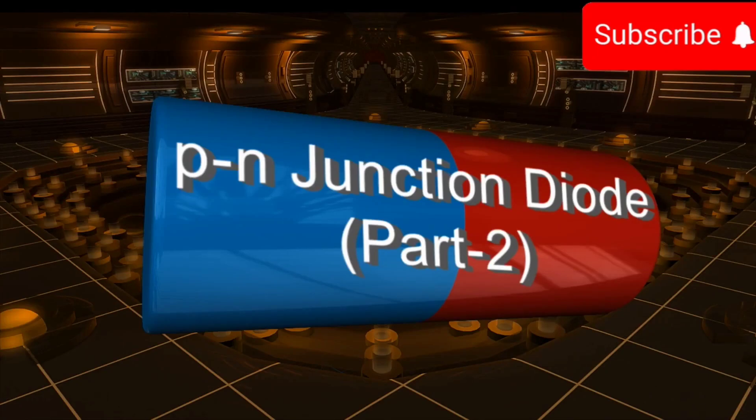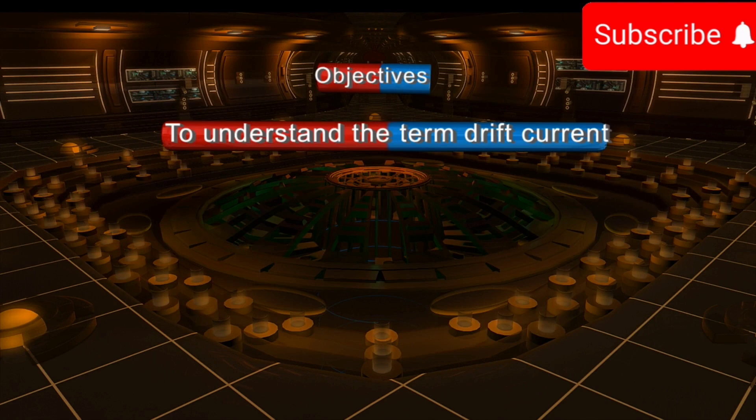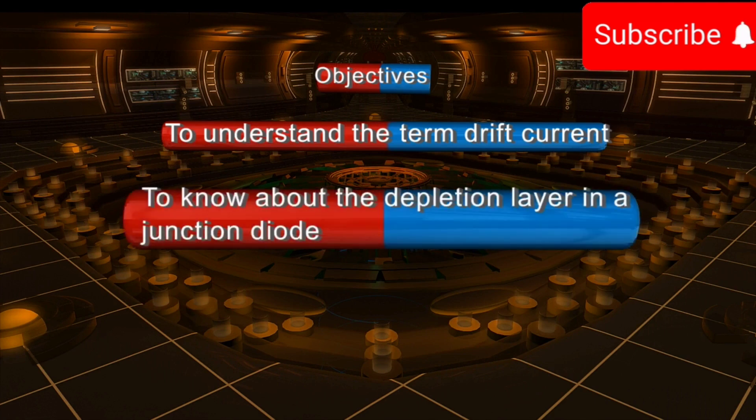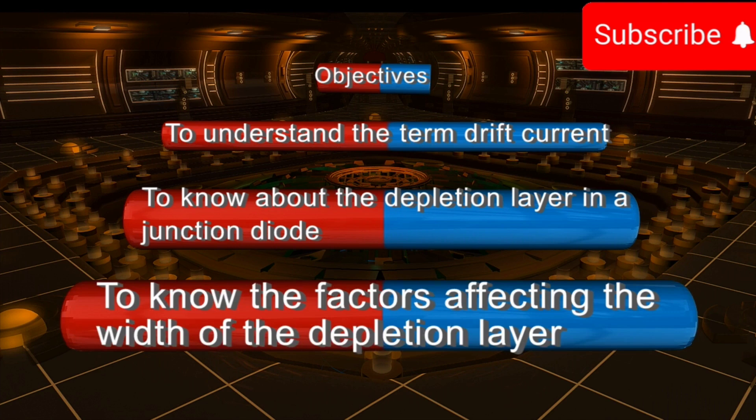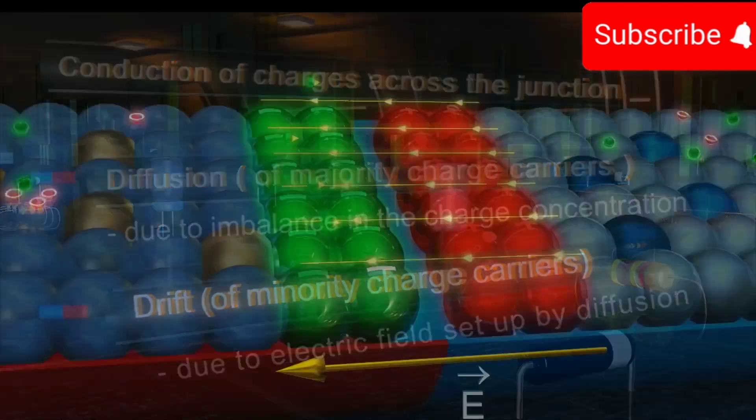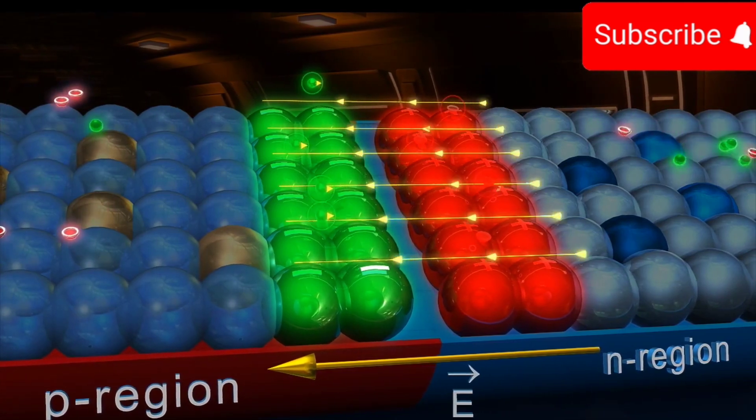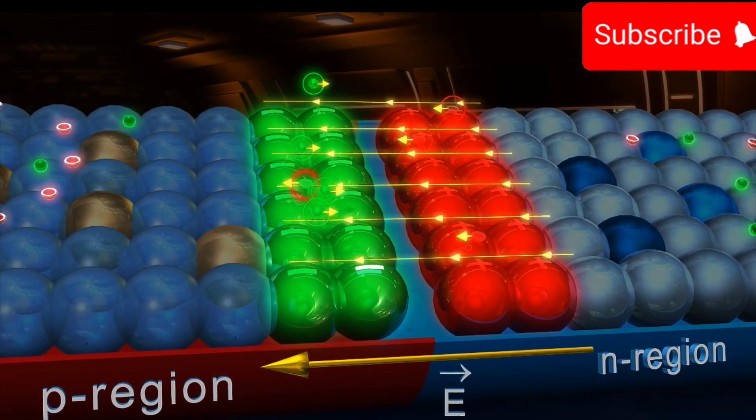PN Junction Diode Part 2. Objectives: To understand the term drift current, to know about the depletion layer in a junction diode, to know the factors affecting the width of the depletion layer. Some minority charge carriers of the P and N regions tend to move randomly in the region of the field set up near the junction.